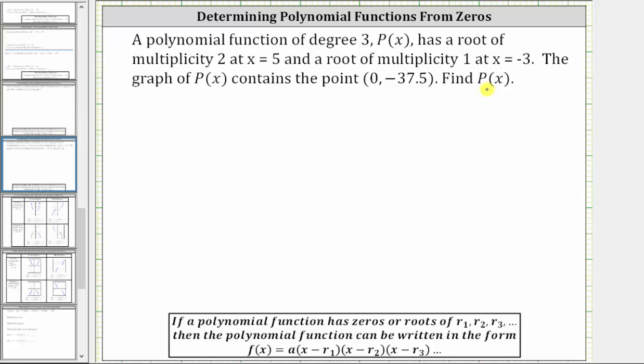Whenever we are given the roots or zeros of a polynomial function, we are also given binomial factors of the polynomial function. If a polynomial function has roots of r₁, r₂, r₃, and so on, then the polynomial function can be written in the form as shown here, where a is a constant, and notice each binomial factor is in the form of x minus the root or zero.